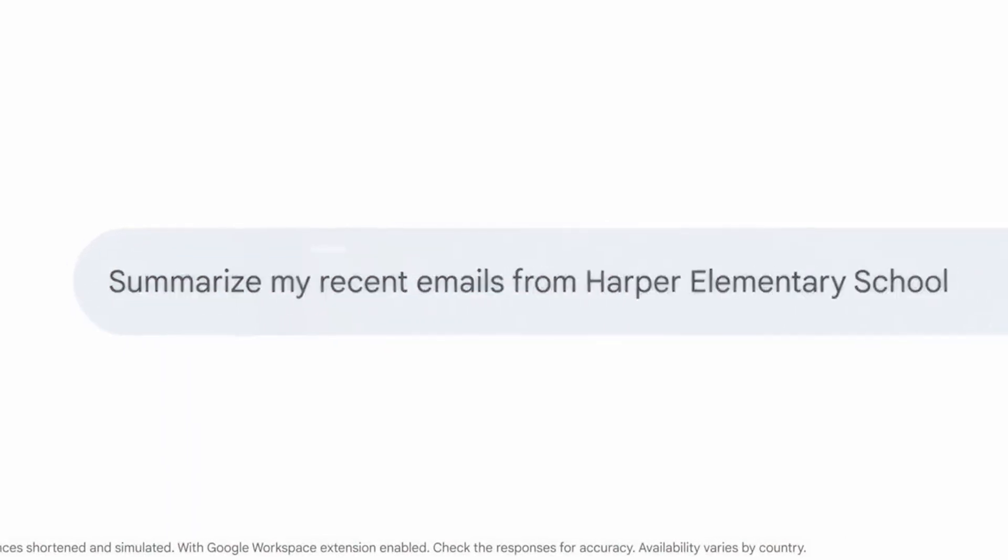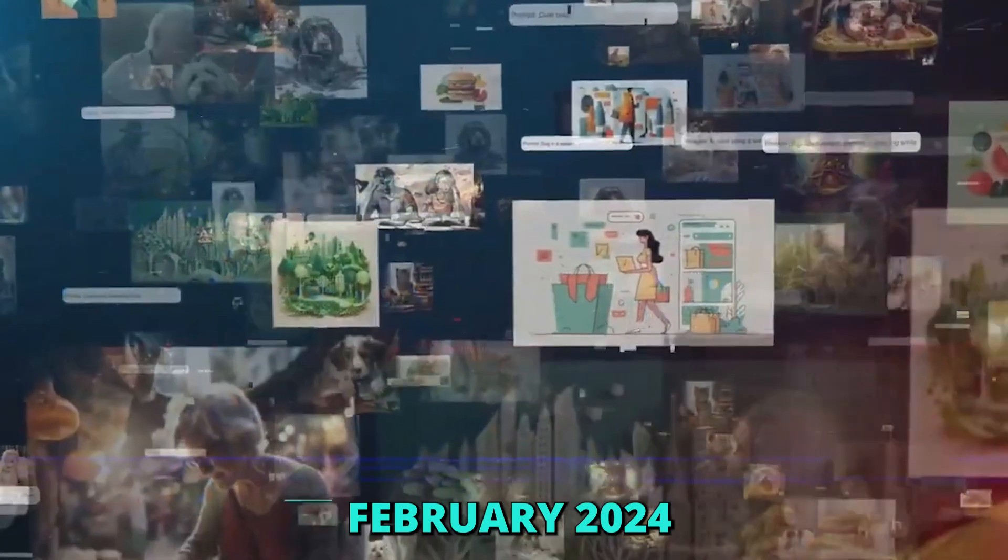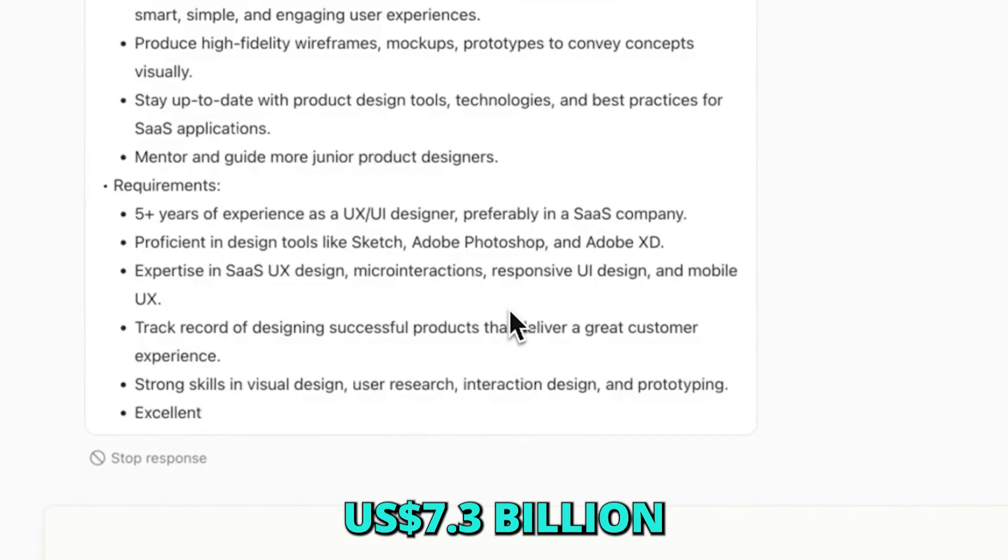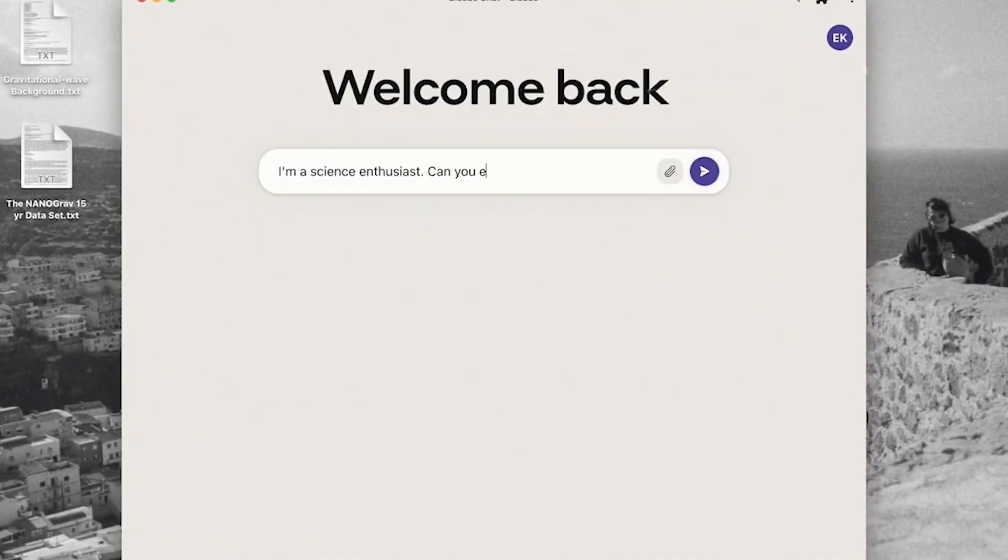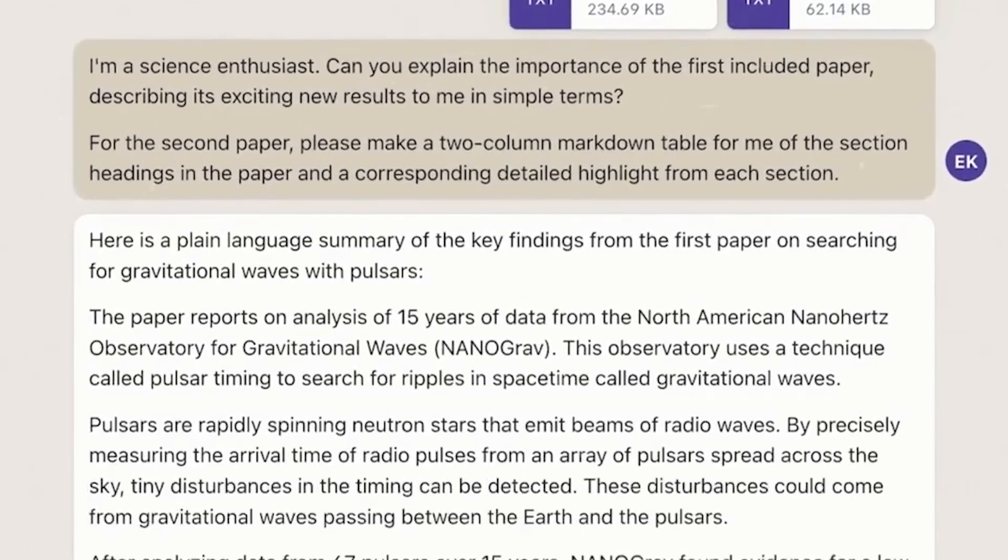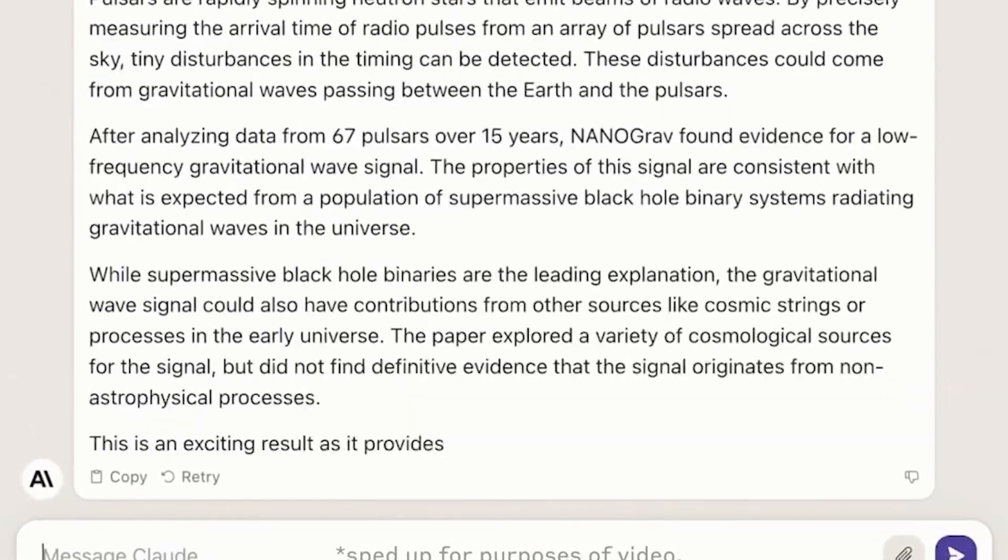The company has been successful in raising significant funding. As of February 2024, Anthropic had raised a total of $7.3 billion in funding. This includes investments from major tech companies like Amazon and Google, as well as venture capital firms like Menlo Ventures.